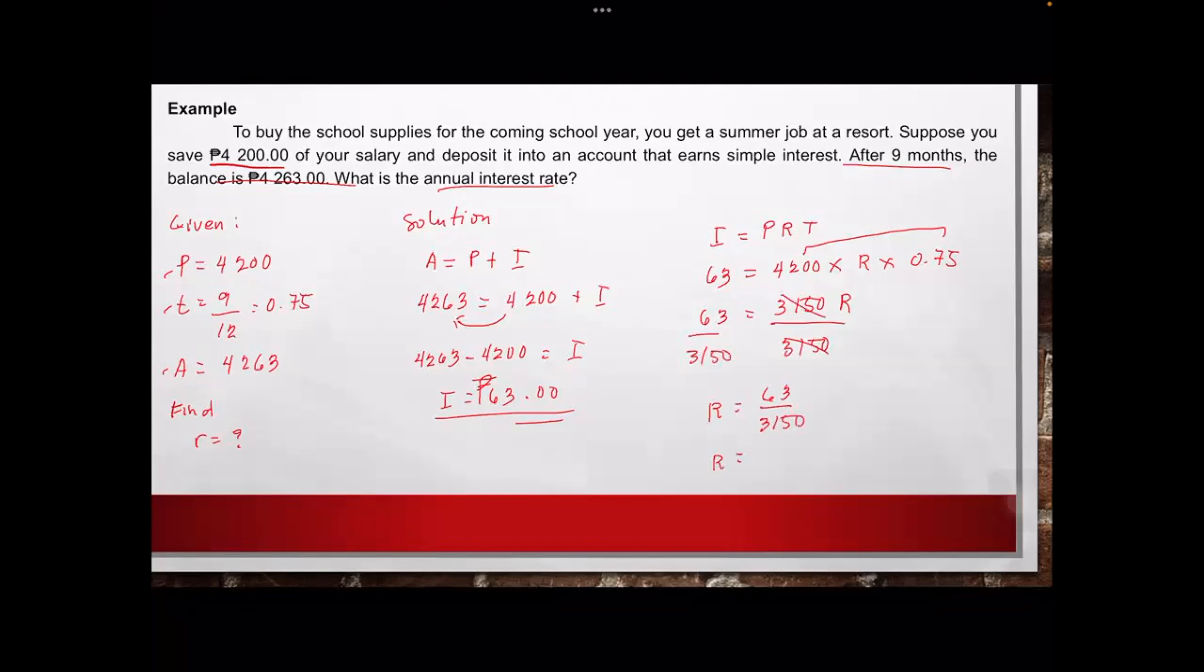Now, what will be the R? 63 divided by 3,150, we will have 0.02. Since R is in percentage but we're in decimal, we multiply by 100. Therefore, your R equals 2 percent. So the final answer will be 2 percent as the annual interest for the 4,263 as the amount within 9 months, with the principal of 4,200.